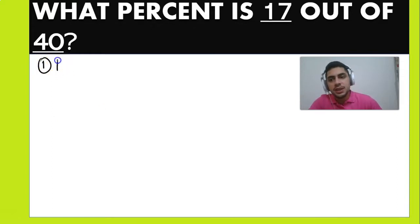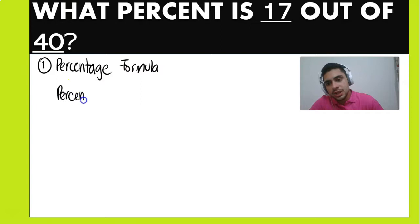The first method we're going to be using is the percentage formula. So in order to find the percentage, we're going to be applying the formula. So the percentage is going to be the part divided by the total or the whole, and that is going to be multiplied by 100 percent.